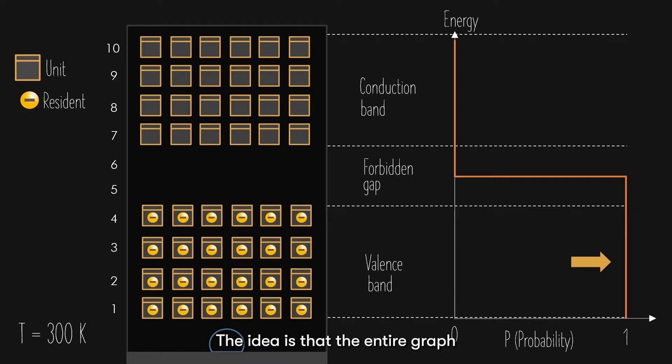The idea is that the entire graph looks like a step function. The probability is either 0 or 1. Nothing in between, no 0.3, no 0.5. It either exists or it doesn't.